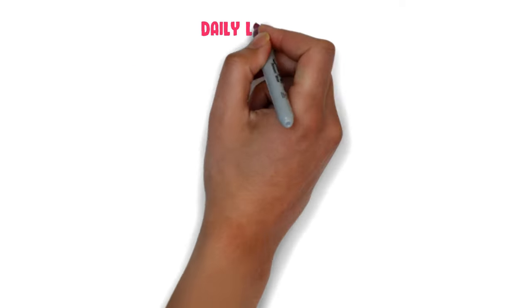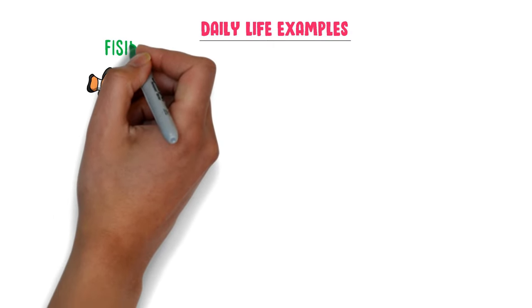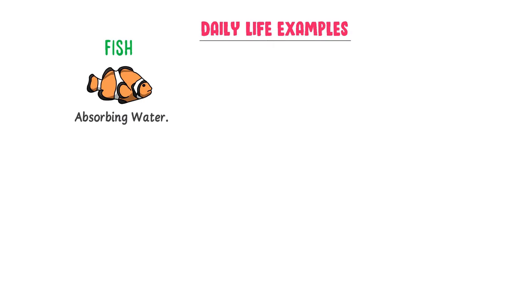Let me give some daily life examples of osmosis. First, fish absorb water through skin and gills. Second, plants absorb water from the soil through root hairs. Third, a potato placed in water absorbs water through osmosis. Fourth, digested food is absorbed in the small and large intestine through osmosis.